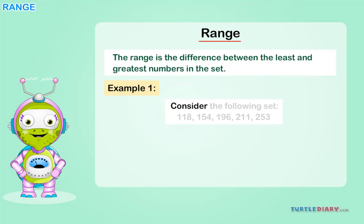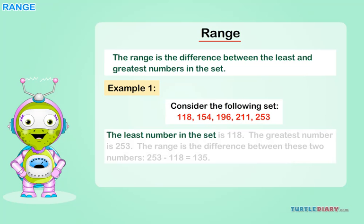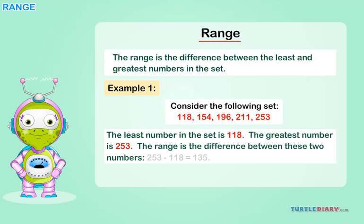Consider the following set: 118, 154, 196, 211, 253. The least number in the set is 118, the greatest number is 253. The range is the difference between these two numbers: 253 minus 118 equals 135. 135 is the range.